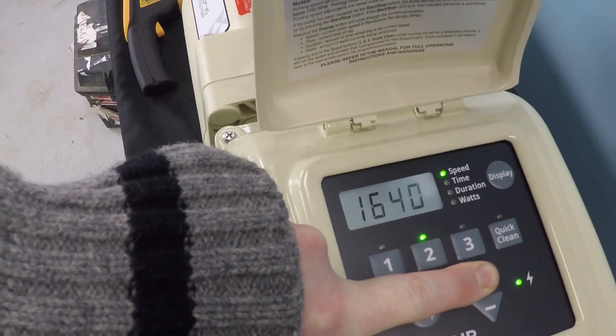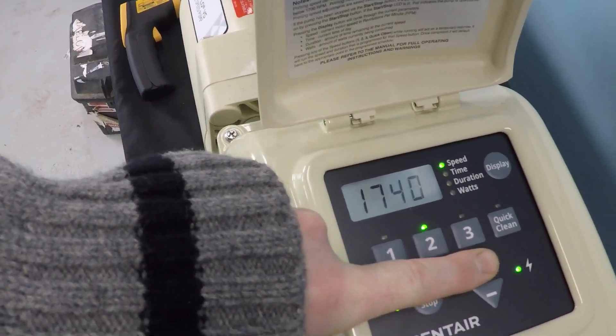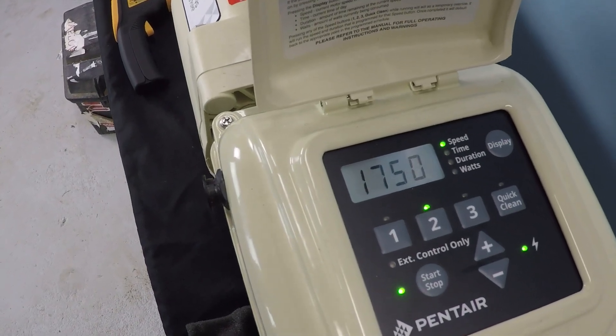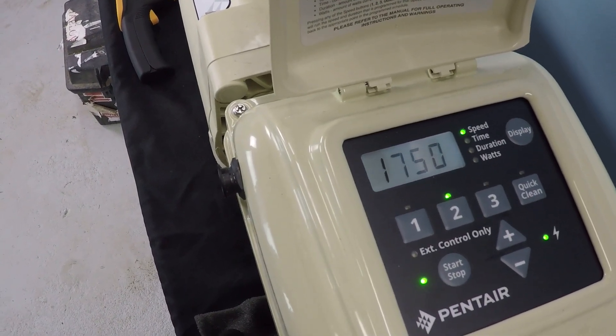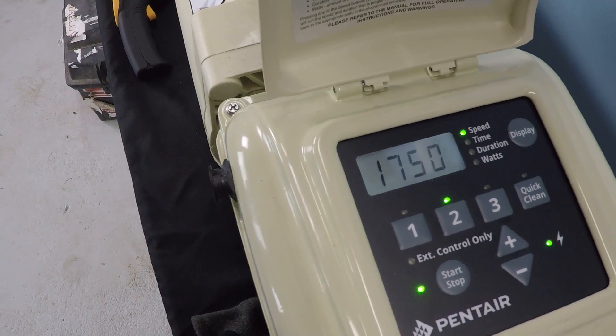If we just let the pump run like that for 24 hours a day, that would be a lot of water that we're able to filter. As you saw, the current draw is still really low at these low motor RPMs.